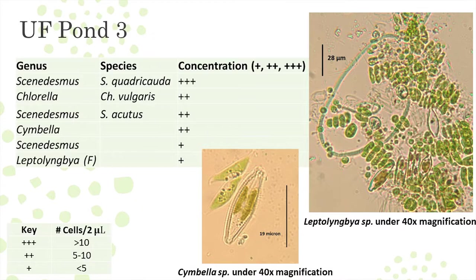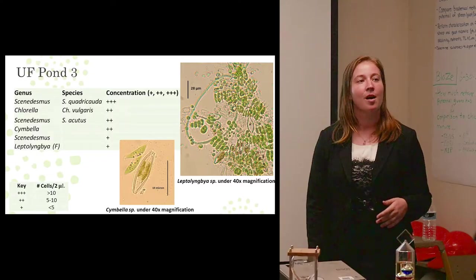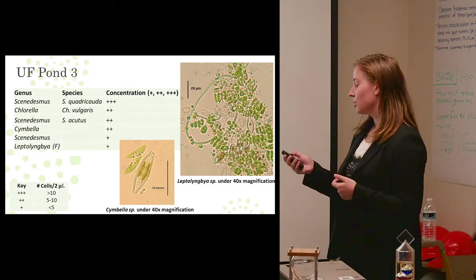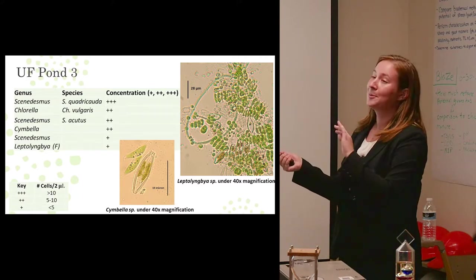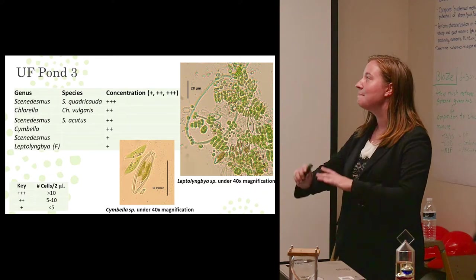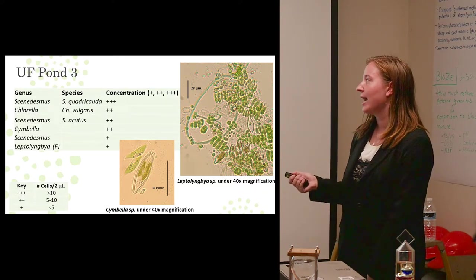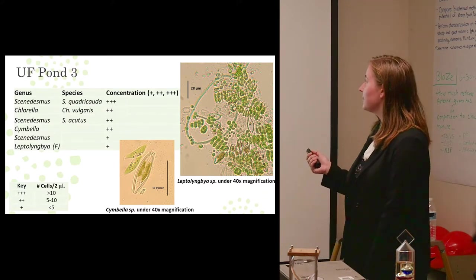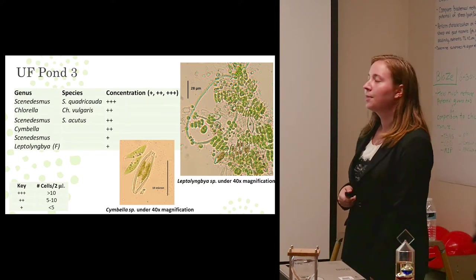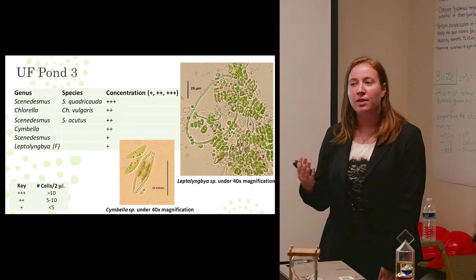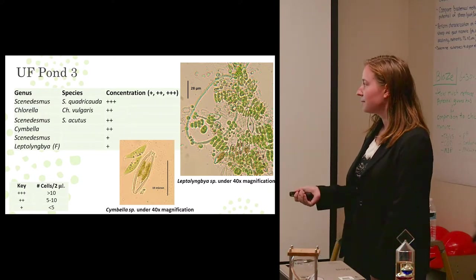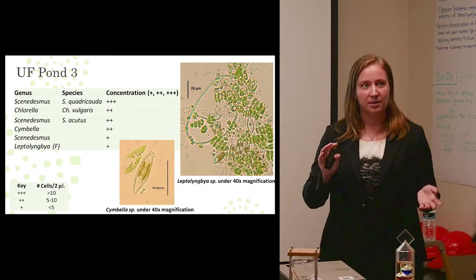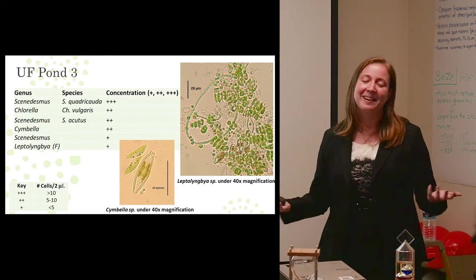So now Pond 3, once again, Scenedesmus is a big player. It's very common in our ponds. And we also have Chlorella present. That's another very common species. So we have two different species of Scenedesmus and Chlorella. Those are our main players. And as you can see at the bottom, we have that filamentous algae again. And it wasn't nearly as concentrated as in Pond 2, but it was still present. You can see that in this picture. This is a general overview of what the pond looked like. There wasn't a lot of that filamentous algae, but it was still prevalent. And then here's also a picture of Cymbella, just to give you some ideas of the different types of algae, to give you more of an overview so you don't see Scenedesmus every single slide, because there's a lot of Scenedesmus.